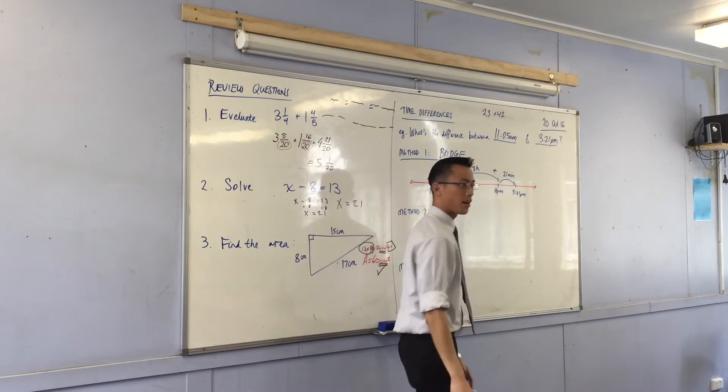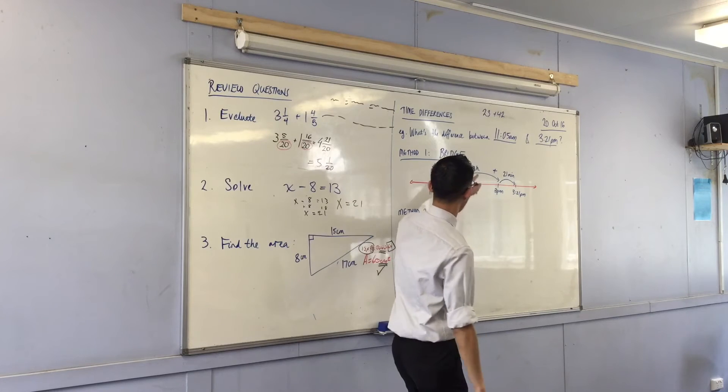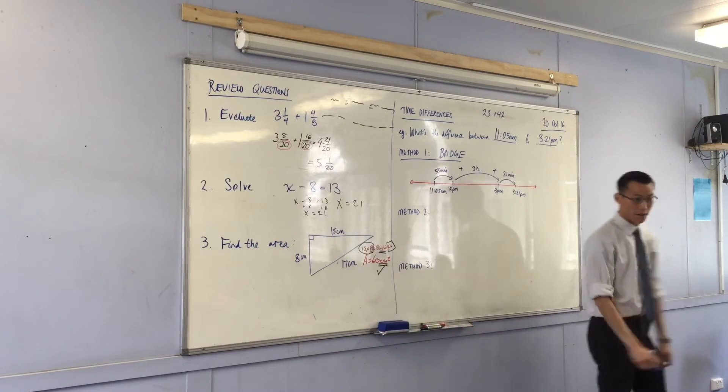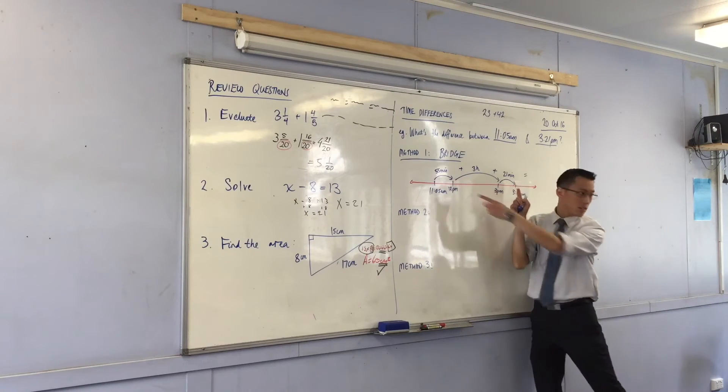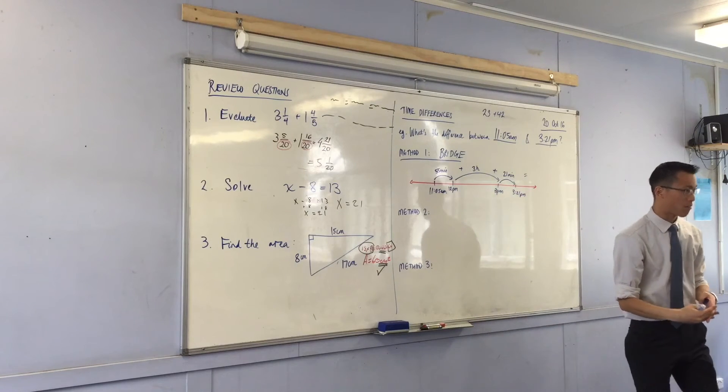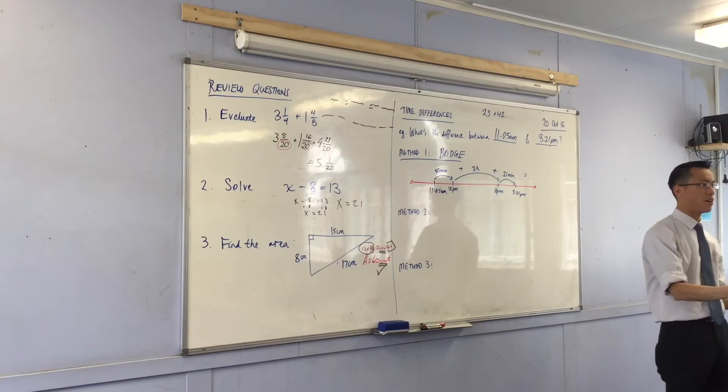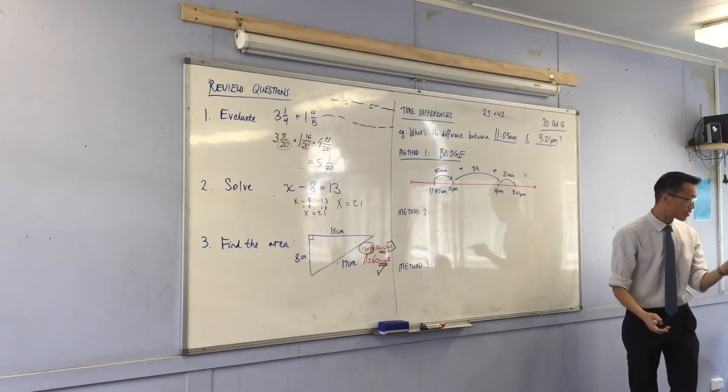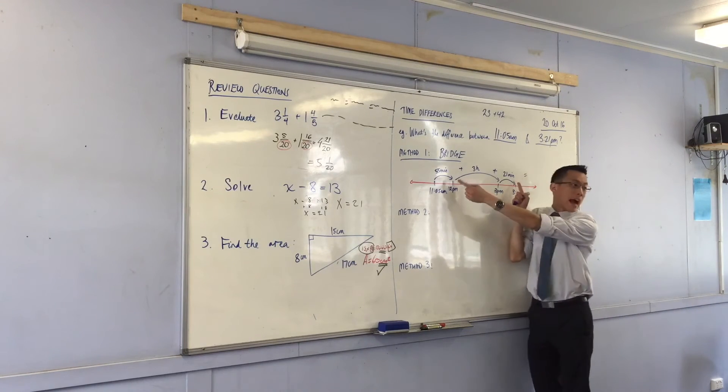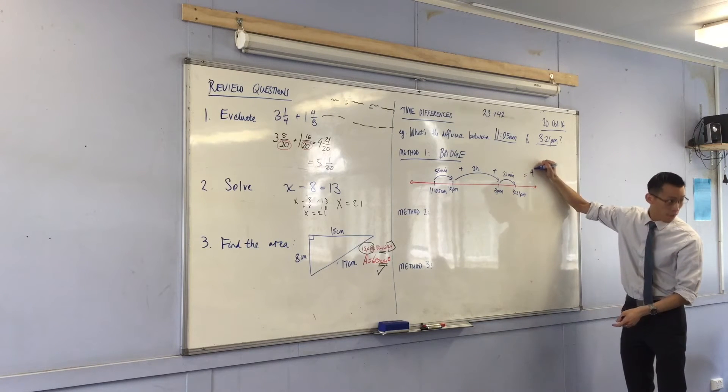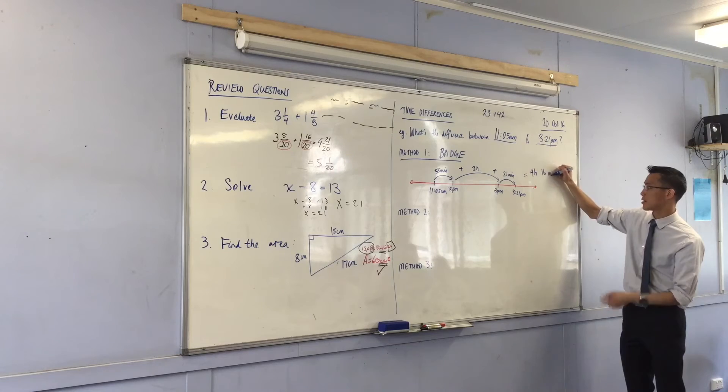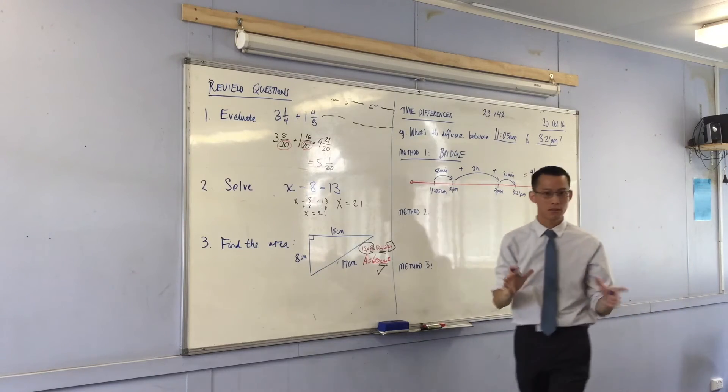It's all of these differences added up together. So I can say three hours plus 55 minutes plus 21 minutes. Now, I think if you do these minutes, you can see it's going to add to more than an hour. It's an hour and 16 minutes. So that means in total, I'm going to have four hours and 16 minutes. Does it make sense?